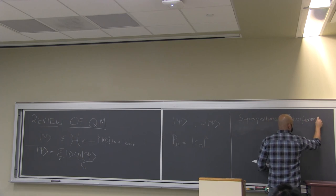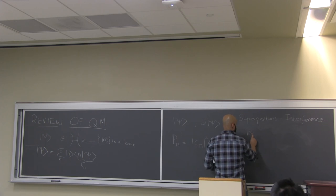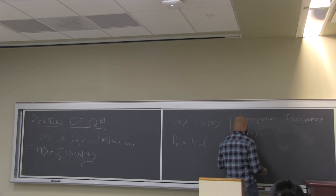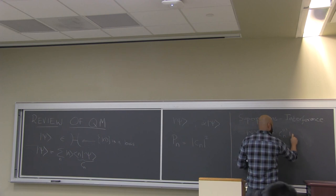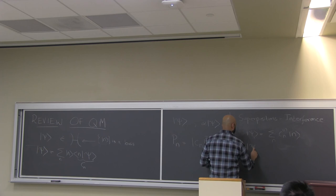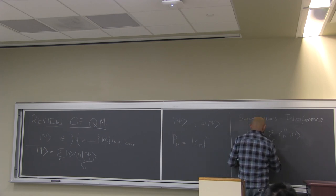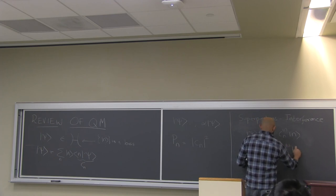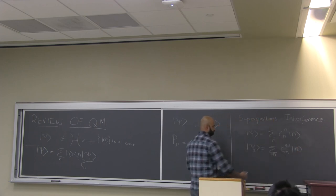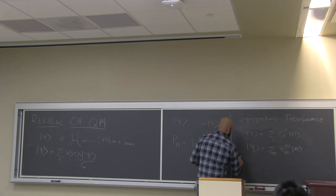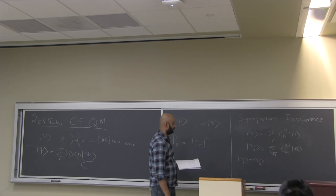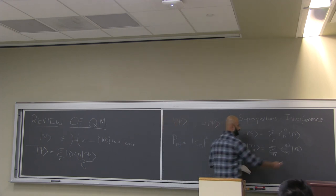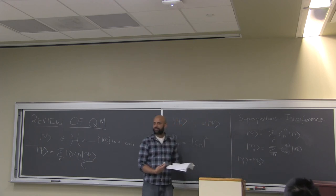If you take two states of the system, |ψ₁⟩ and |ψ₂⟩, both expanded along the same orthonormal basis, and take the superposition |ψ₁⟩ + |ψ₂⟩, the probability P_n to be in state |n⟩ is no longer just the sum of the individual probabilities.